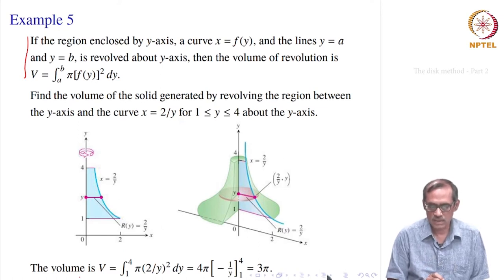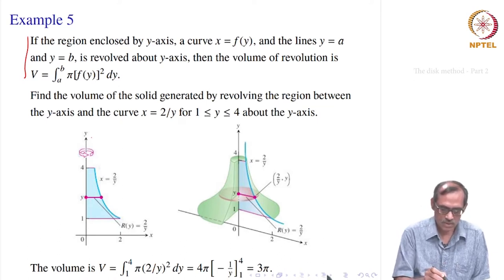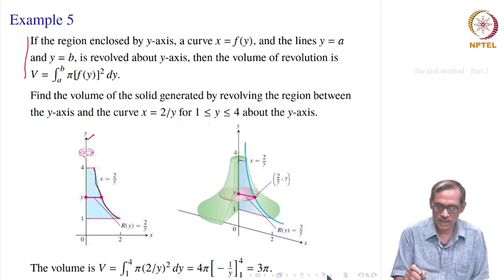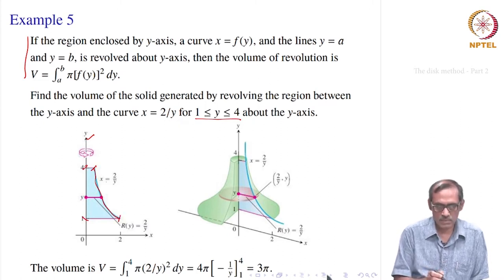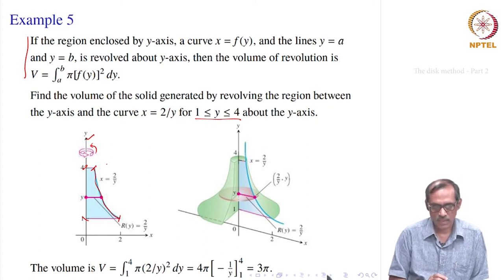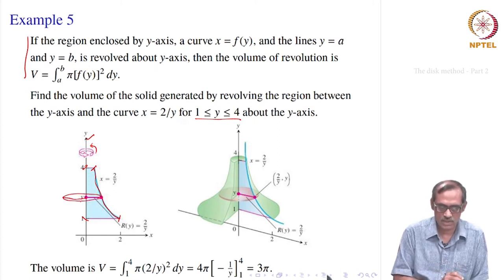Find the volume of the solid generated by revolving the region between the y-axis and the curve x equal to 2 divided by y, for 1 ≤ y ≤ 4. This is the portion of the curve being revolved around the y-axis. You get a solid — painted green in the second picture. We want to find such a volume, and since this generates a disk, we go back to our formula.